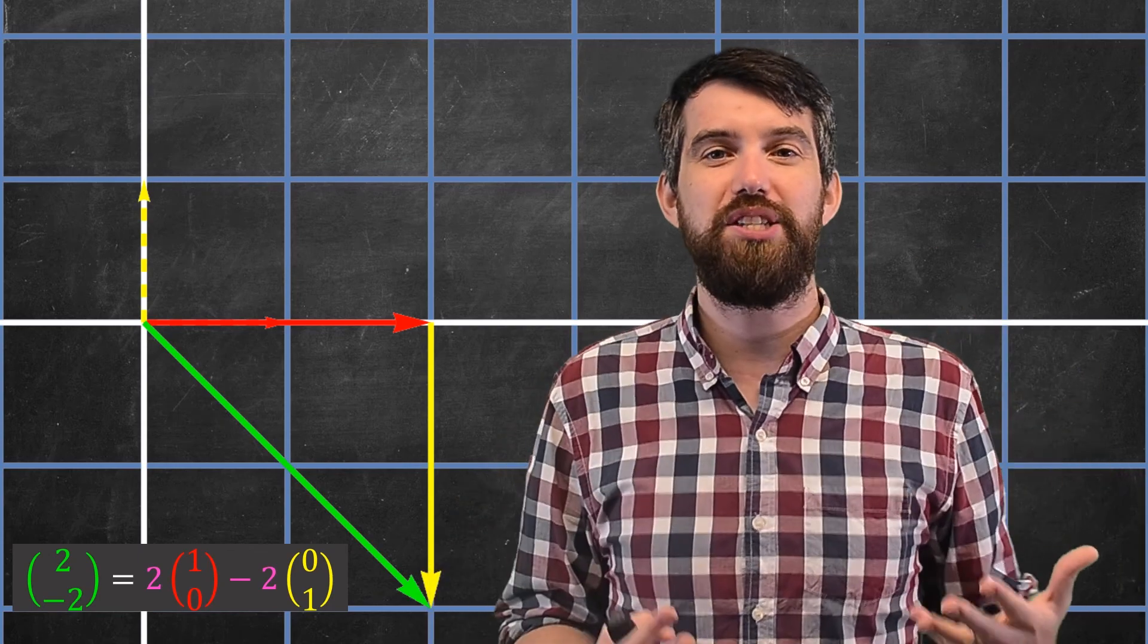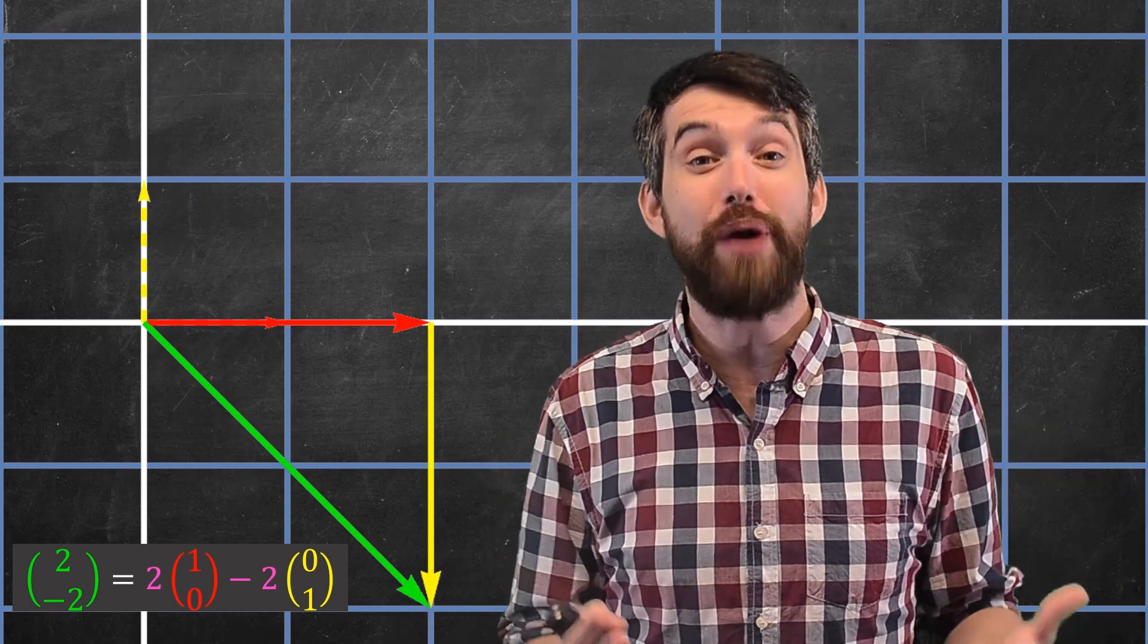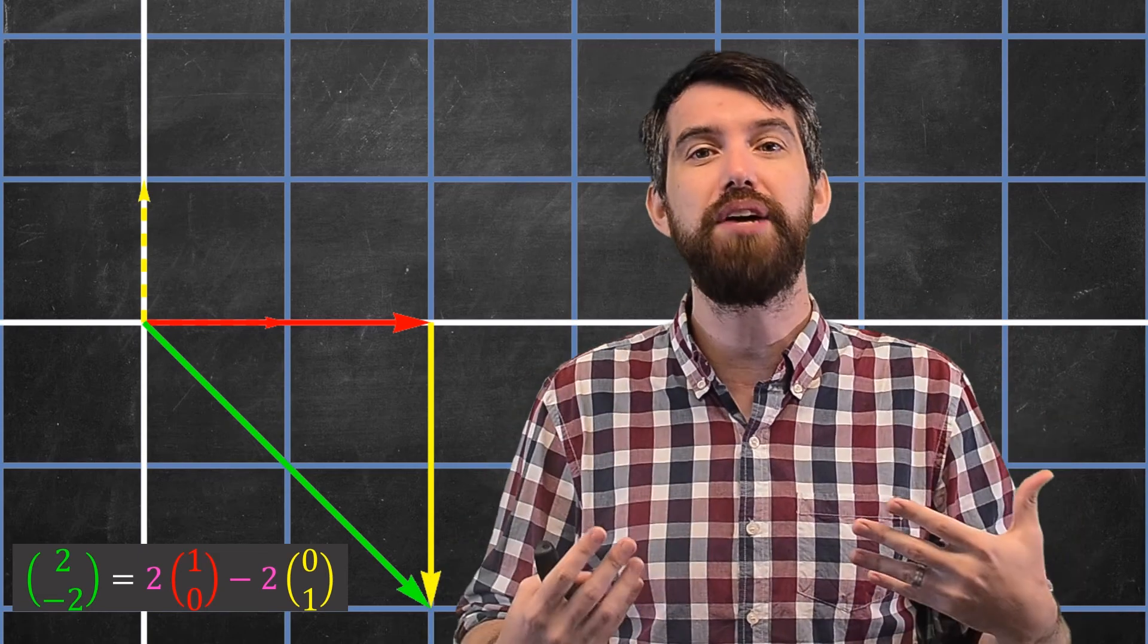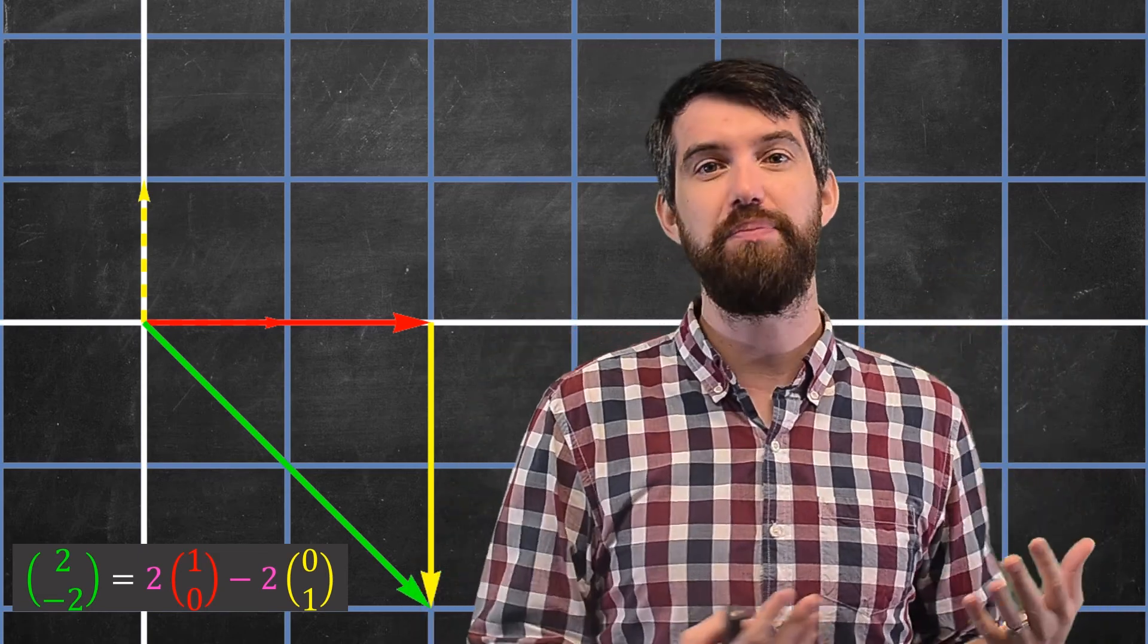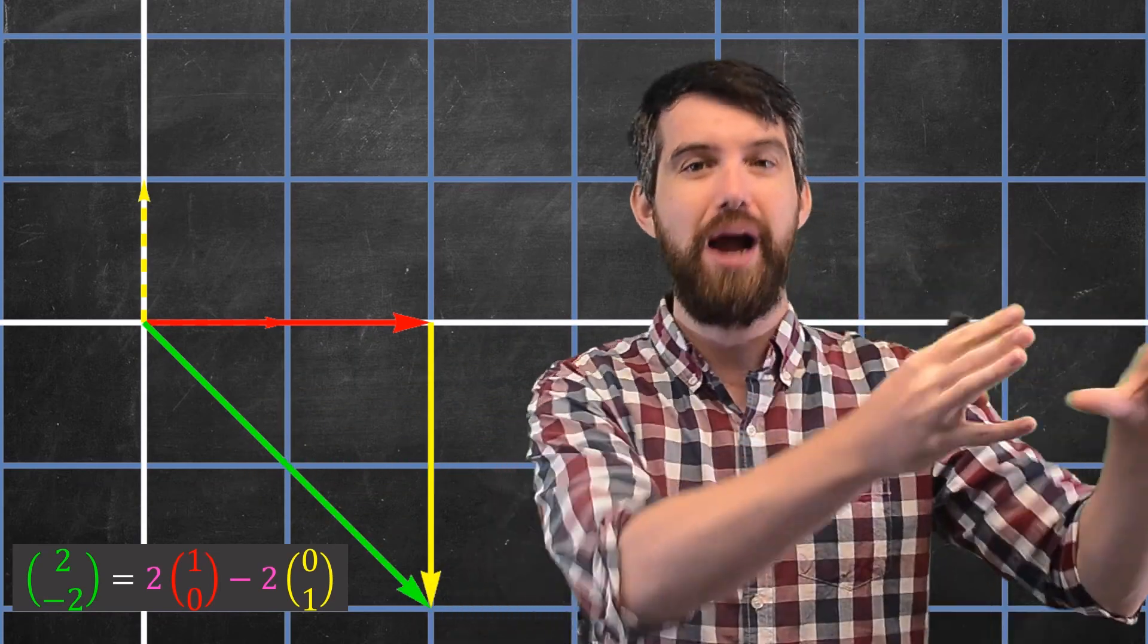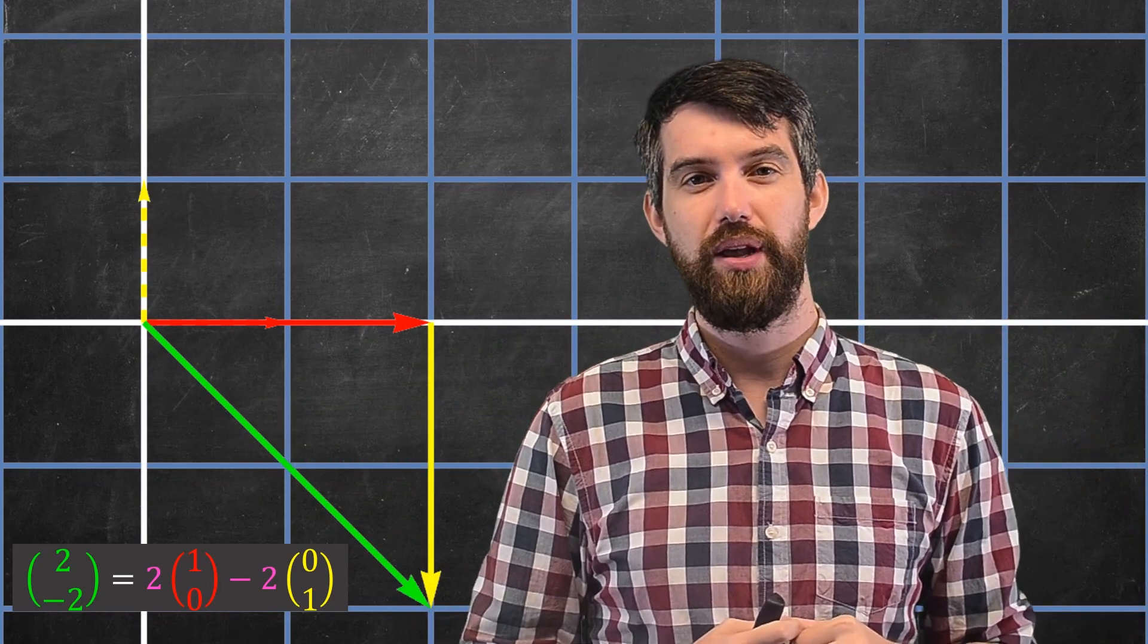So a coordinate system is just some way that I can keep track of points. I can keep track of the point, like (2, -2), in terms of an instruction. It tells me where am I supposed to go. I'm supposed to go twice along this one vector and minus 2 along this other vector.